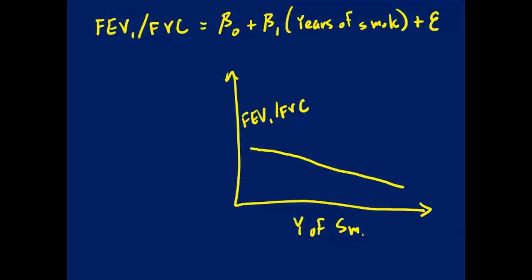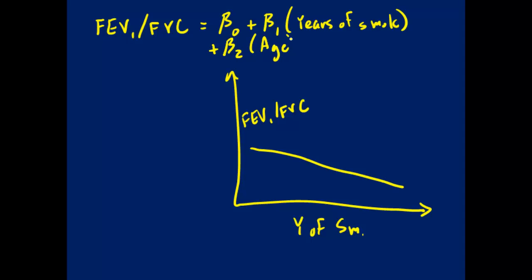Now I want to think about what happens when we add another variable to the model. We would add another variable to condition on it. For example, I might add the continuous variable age. So we would have a third beta value times age, and then the random component of the model. This is similar to the shorthand version we were using before.